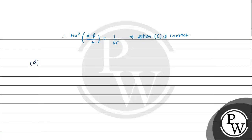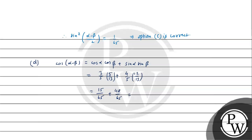Option D: cos(α−β). Applying the formula: cos α cos β + sin α sin β = (3/5)(5/13) + (4/5)(12/13) = 15/65 + 48/65 = 63/65. This matches option D exactly. Therefore option D is correct.